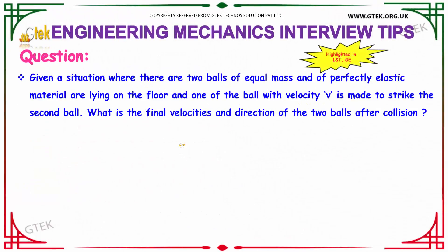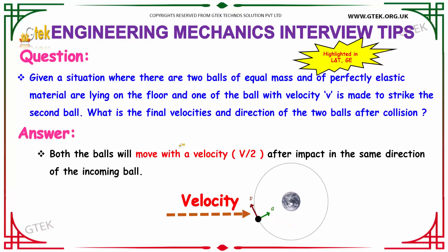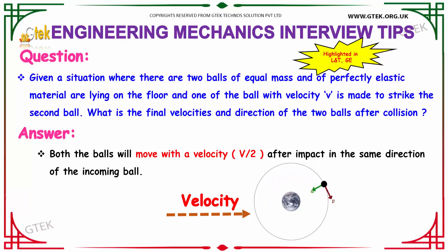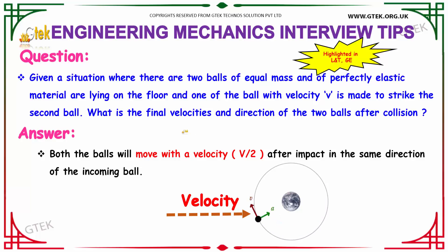The next question is a situational problem. Given a situation where there are two balls of equal mass and of perfectly elastic material lying on the floor, and one of the balls with velocity v is made to strike the second ball, find the final velocities and direction of the two balls after collision. The answer is: both balls will move with velocity v/2 after impact in the same direction as the incoming ball.